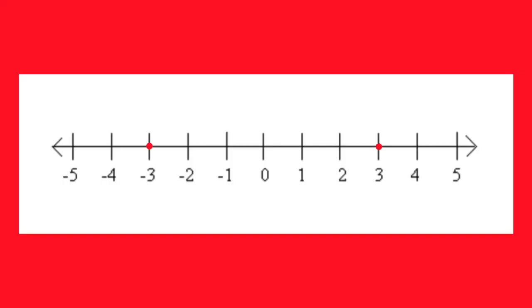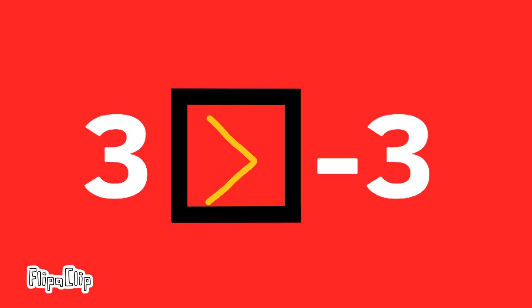3 compared to negative 3. On the number line, positive 3 is to the right of negative 3, and that makes positive 3 greater than negative 3. Reading from left to right, 3 is greater than negative 3. From right to left, it would read negative 3 is less than 3.